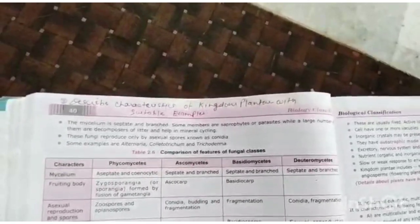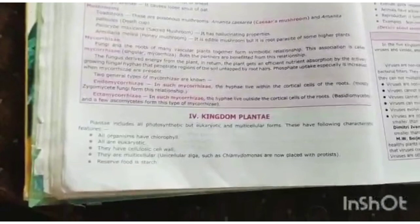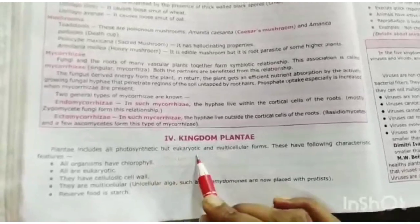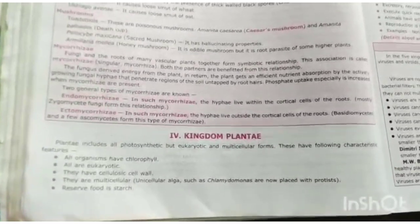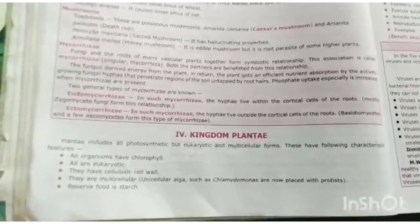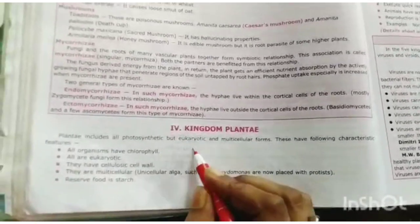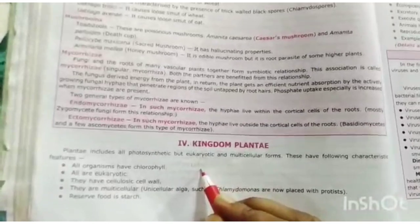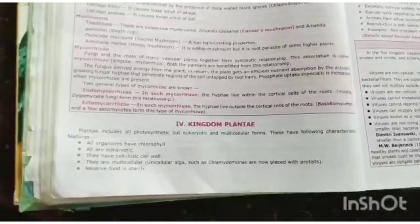Plantae includes all the photosynthetic, eukaryotic, multicellular forms. Plantae kingdom mein photosynthetic organisms hain jo apna food photosynthesis ke process se maintain karte hain. Eukaryotic means they have a well-developed nucleus, and multicellular means they have multiple cells.